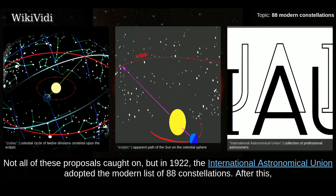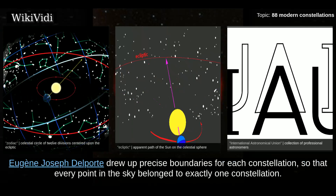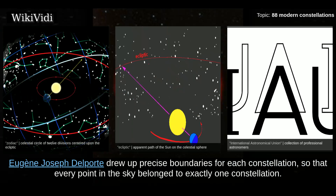Not all of these proposals caught on, but in 1922, the International Astronomical Union adopted the modern list of 88 constellations. After this, Eugene Joseph Delport drew up precise boundaries for each constellation, so that every point in the sky belonged to exactly one constellation.